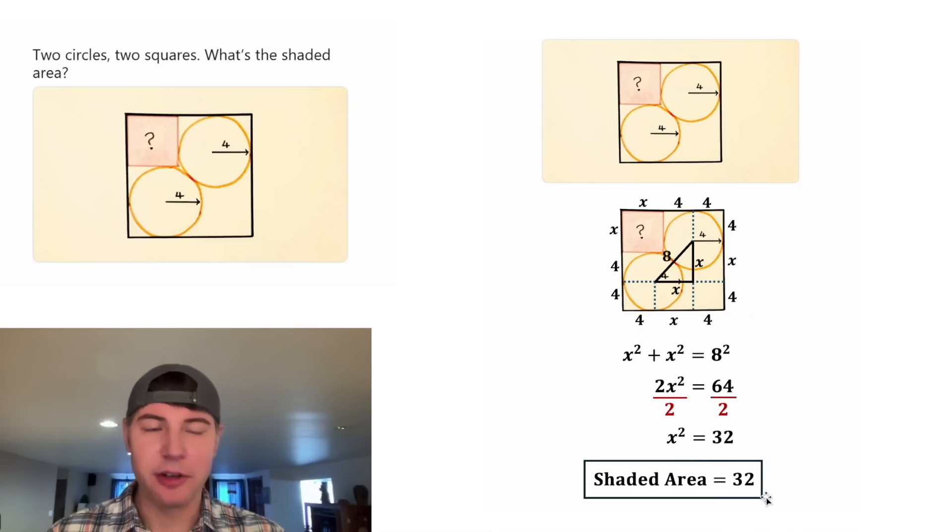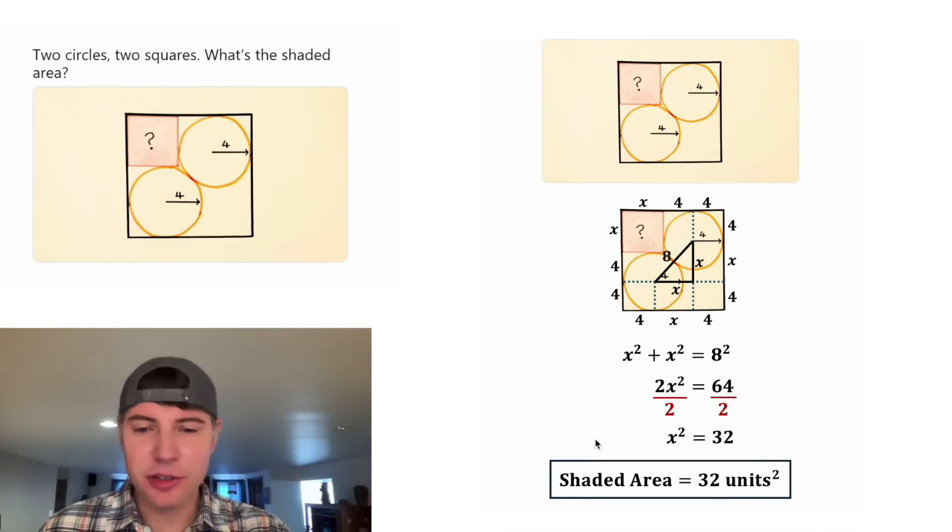Let's change this X squared into a 32. Let's make some room for a label, and there's no units mentioned, so we'll just put units squared. And this is the answer to our question. The shaded area is 32 units squared.